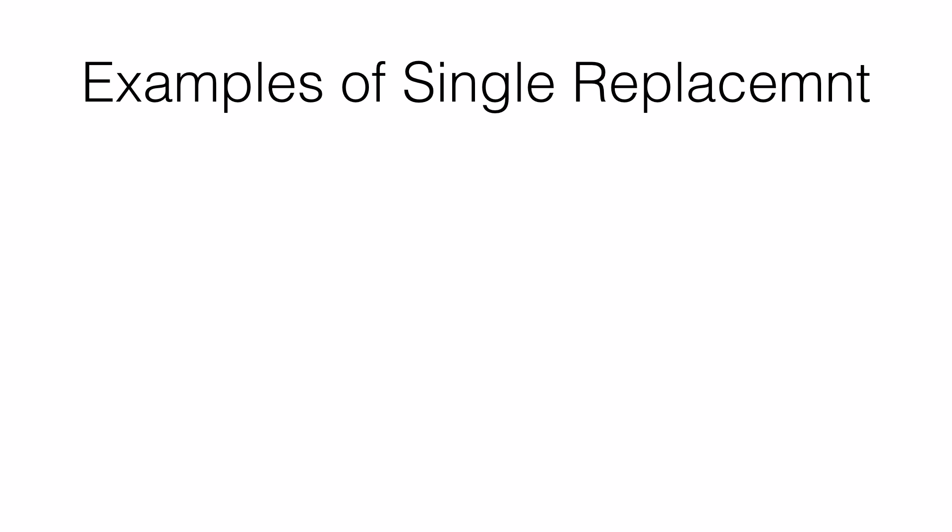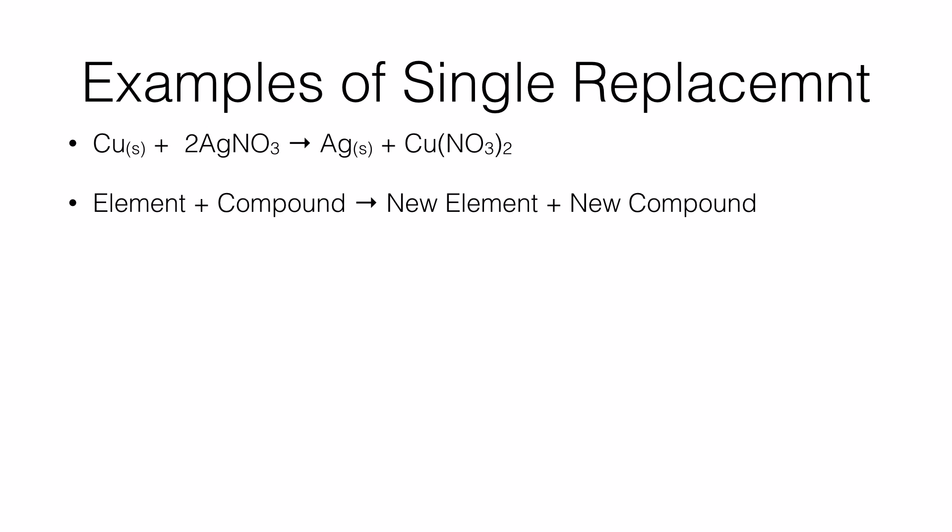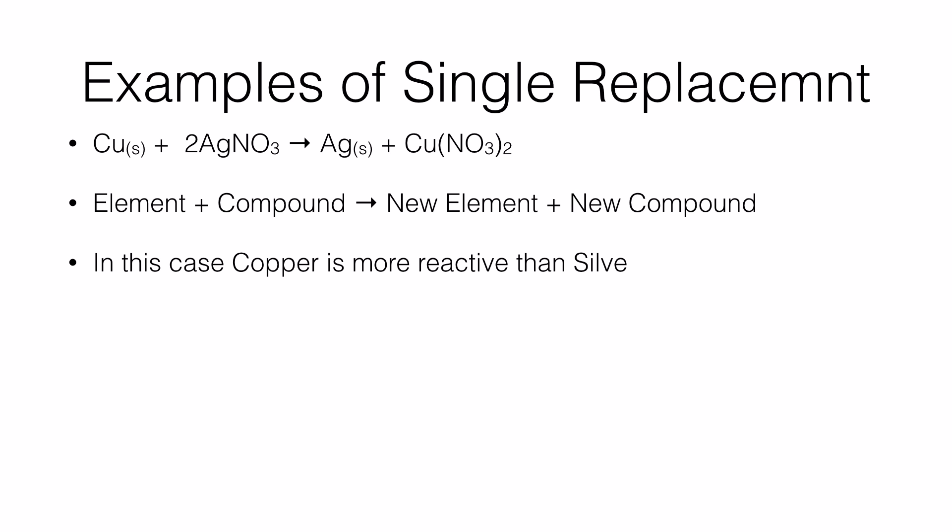Here are some examples of single displacement reaction. Copper reacting with silver nitrate gives you silver plus copper(II) nitrate — an element reacting with a compound, giving you a new element and a new compound. Obviously, in this case, copper is more reactive than silver.